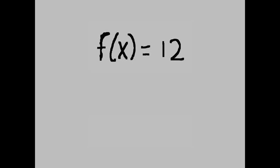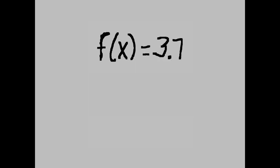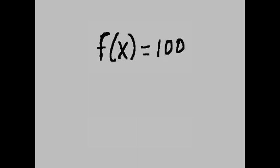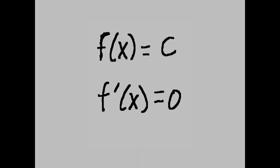f of x equals 12, f prime of x is 0. f of x equals 10, f prime of x equals 0. f of x equals 3.7, f prime of x equals 0. f of x equals 100, f prime of x equals 0. f of x equals 2, f prime of x equals 0. f of x equals c, f prime of x equals 0. c is any constant.